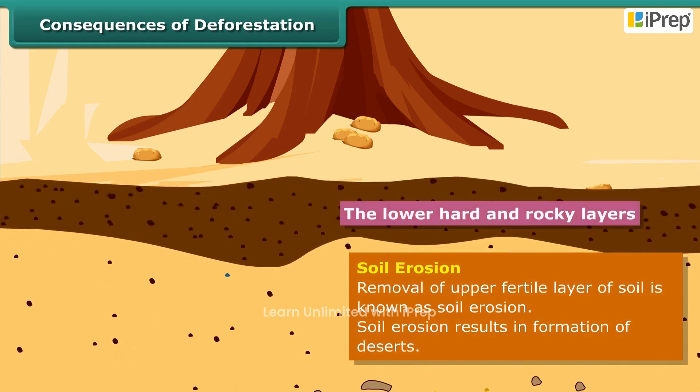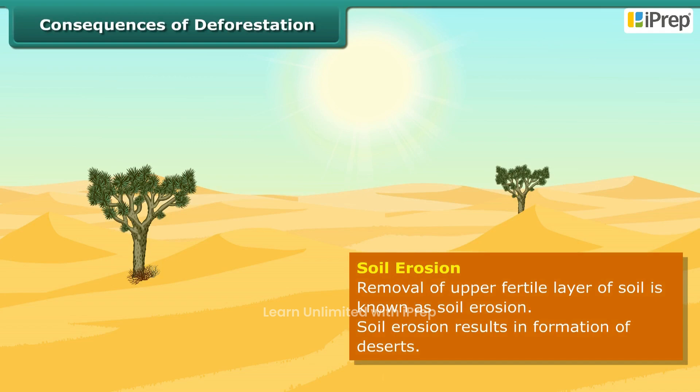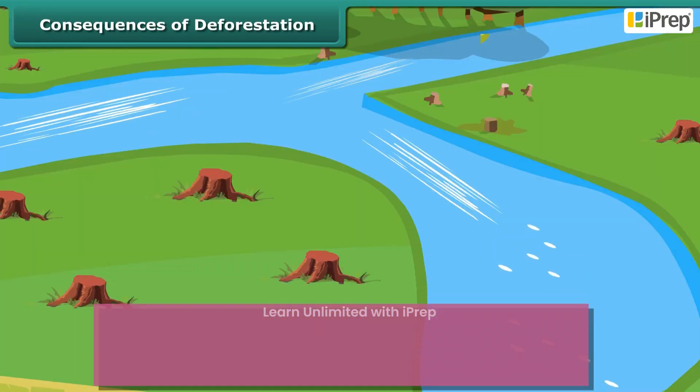The removal of topsoil exposes the lower hard and rocky layers. This layer of soil has less humus and is less fertile. Gradually the fertile land gets converted into deserts. This process is called desertification.